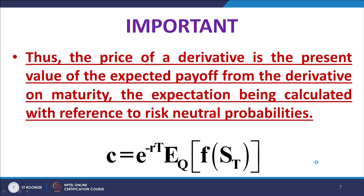In the notation: ft represents the payoff, ST is the payoff of the derivative, and E is the expectation operator. We are working out the expectation of the payoff with respect to Q probabilities — the risk-neutral probabilities — which is indicated by the suffix Q with the expectation operator. Then of course we are discounting to today's date.